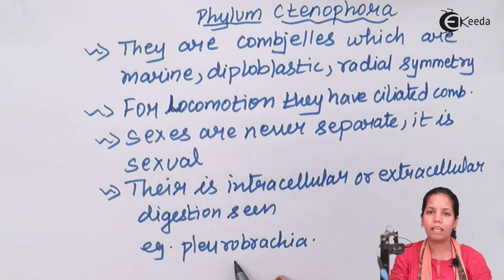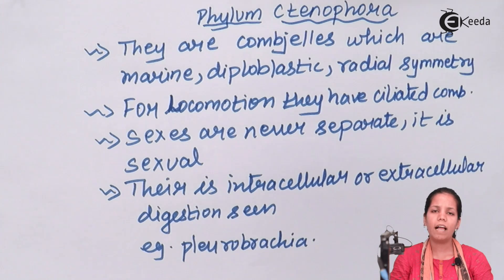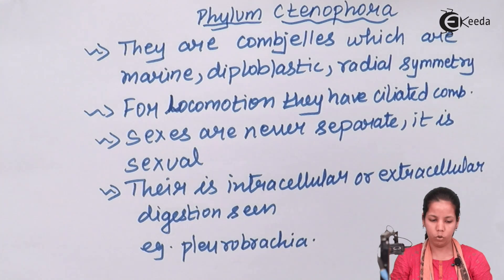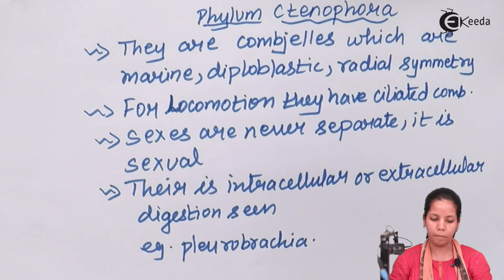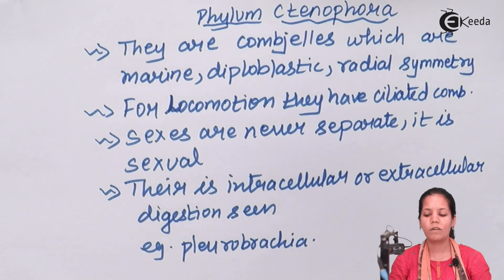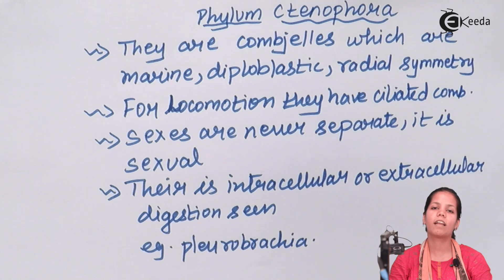Pleurobrachia is one example of this phylum. They sometimes prefer living in groups if they detect potential danger. So students, this was the Ctenophora phylum and I hope you are all clear with this concept. Thank you!